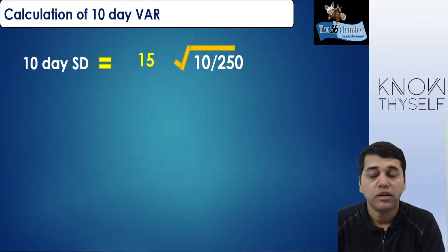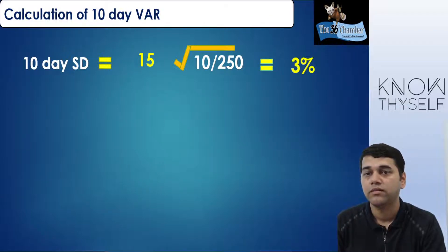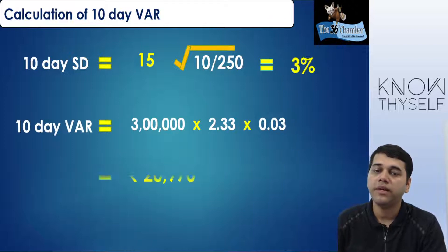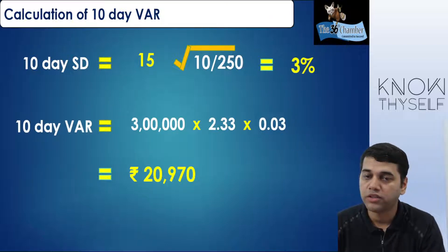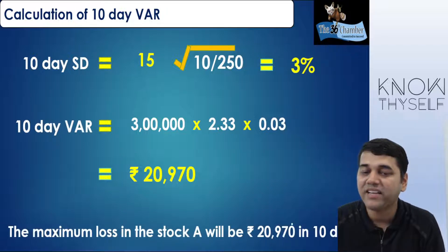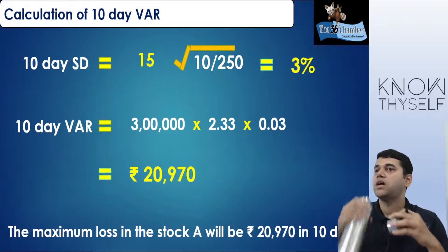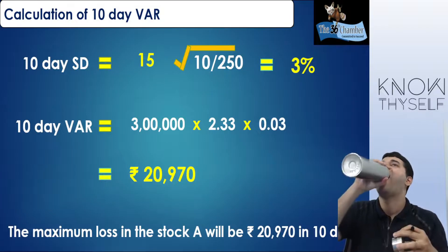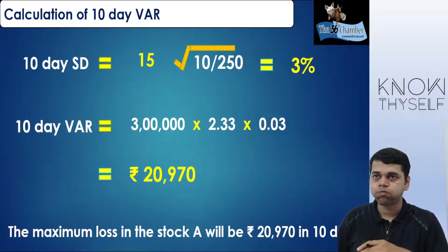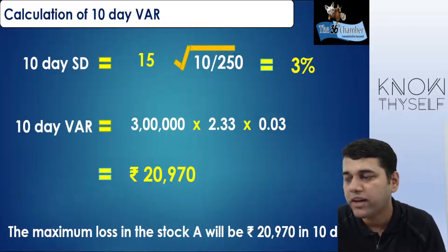Square root of standard deviation for 10 days will be 3%. So VAR = 3 lakh × 2.33 × 0.03. I can say the maximum loss for 10 days will be 20,097 rupees. Concept of VAR is clear — it is not standard deviation, it is how much maximum loss.